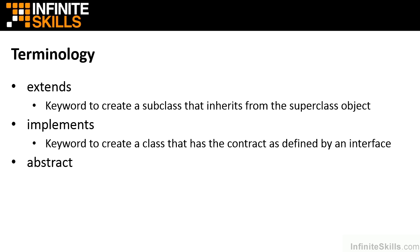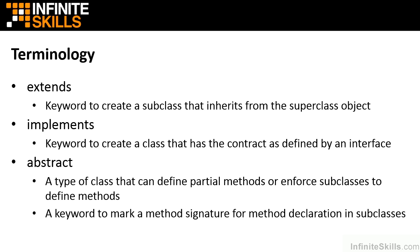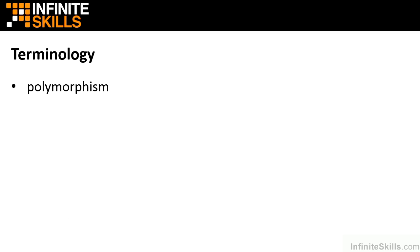We'll also encounter the keyword abstract, used in two different places. First, we can create an abstract class, which — similar to an interface — can have method stubs, but can also have fully defined methods. Additionally, we can mark individual methods as abstract within an abstract class. While abstract methods are inherent in interfaces, in an abstract class we specifically mark them as abstract. This keyword enforces that any subclass extending the abstract class must implement that method.